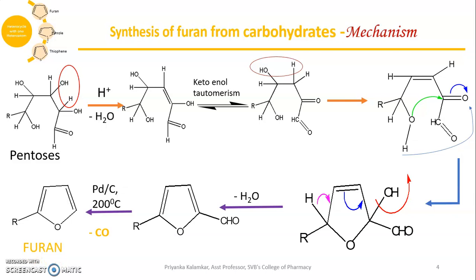If we look at the reaction, this is acid-catalyzed dehydration where there is loss of three water molecules giving you the furfural molecule, in the presence of palladium on activated charcoal or in the presence of silver oxide and steam distillation at 400°C, giving you substituted furan molecules. This is the synthesis of furan from carbohydrates.